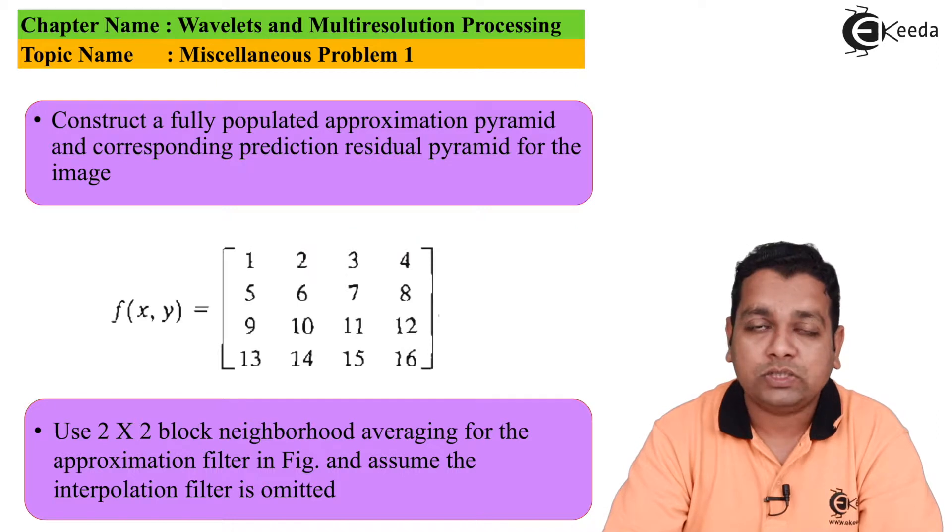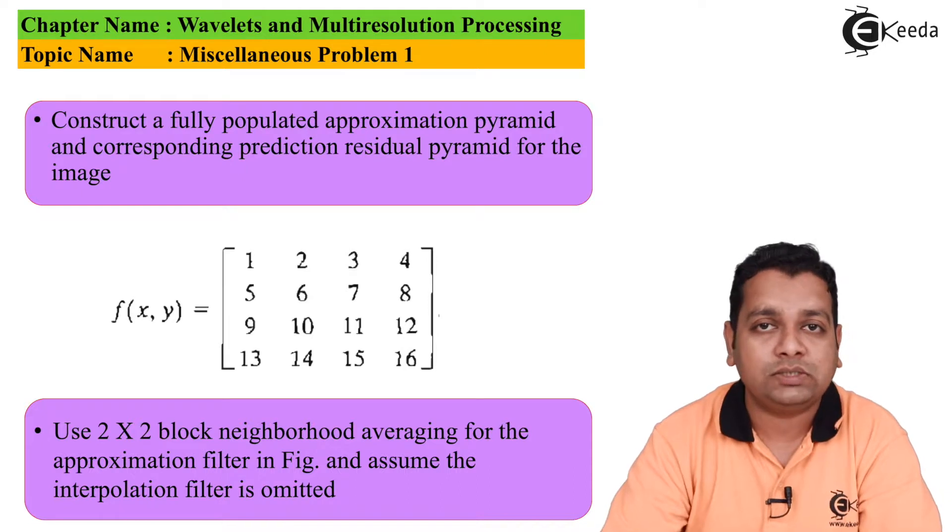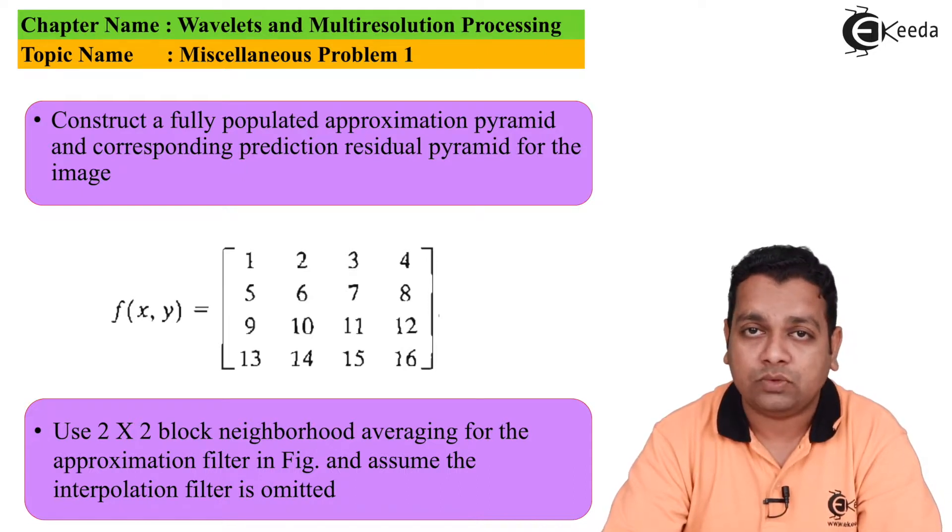The first row has elements 1, 2, 3, 4. Next row: 5, 6, 7, 8. The third row: 9, 10, 11, 12. And the last row: 13, 14, 15, and 16. So 16 elements with the span of 4 rows and 4 columns are given as the input image.